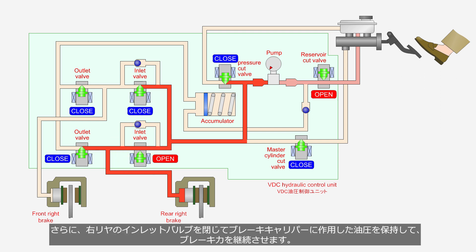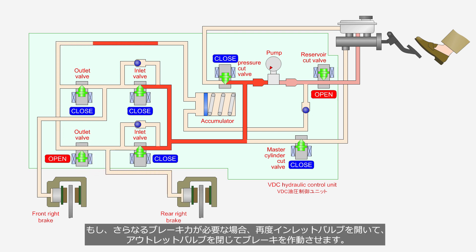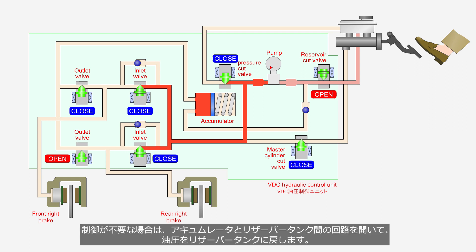Furthermore, it closes the inlet valve for retaining hydraulic pressure to maintain brake force. When tire slip is resolved, the VDC control unit opens the outlet valve for the right rear to release hydraulic pressure. If additional braking force is required, the inlet valve is reopened and the outlet valve is closed again to engage the brake. If more control is not required, it opens the circuit between the accumulator and the reservoir tank to release hydraulic pressure to the reservoir tank.